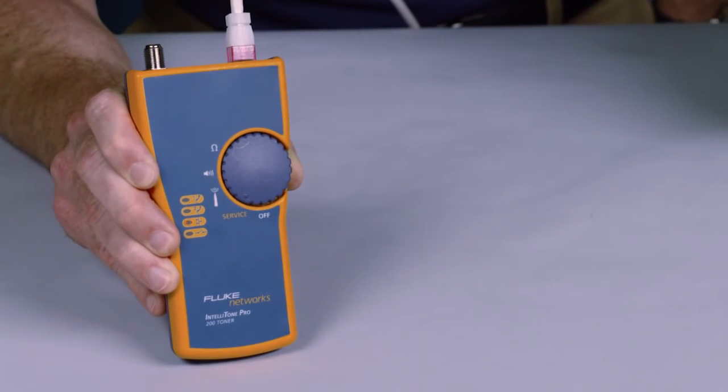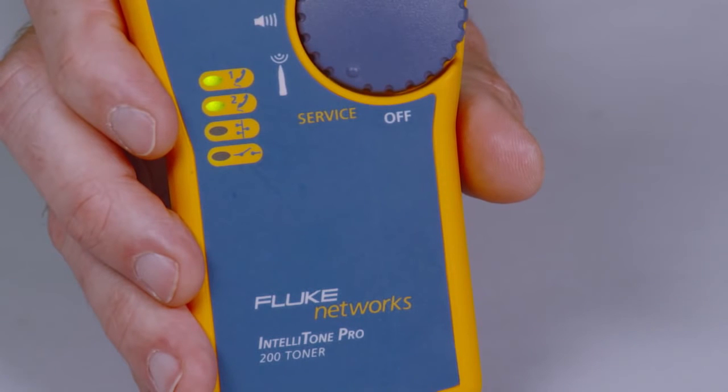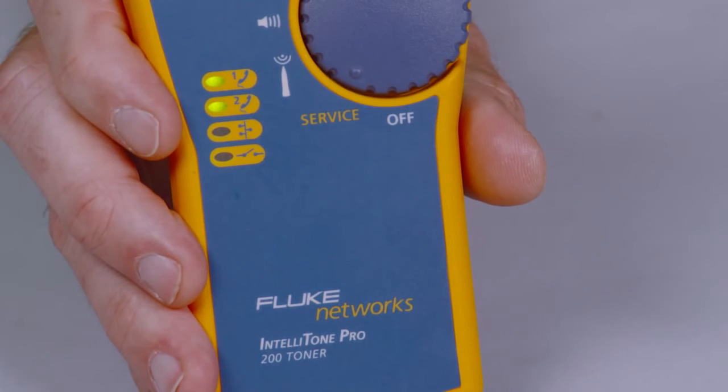Use the 100 to detect line 1 voltage, polarity, and ring. The IntelliTone Pro 200 adds line 2 troubleshooting. Confirm telecom circuits with the built-in talk battery capability and validate telephone service and polarity.